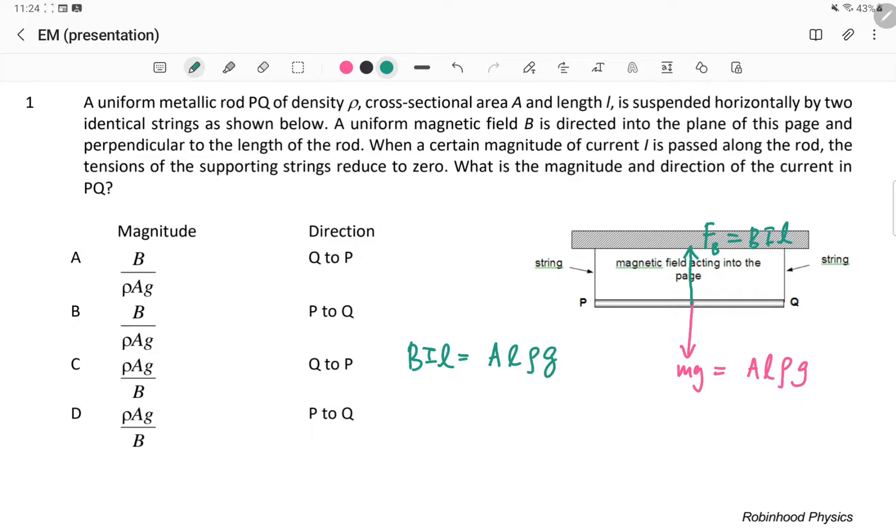So we want to solve for I. I will be equal to ρAg divided by B. That gives us the magnitude, and that will be C or D.